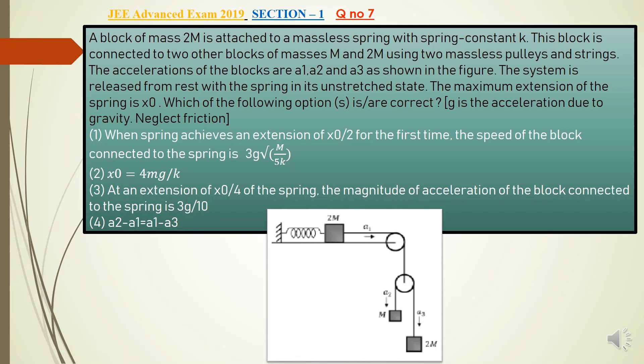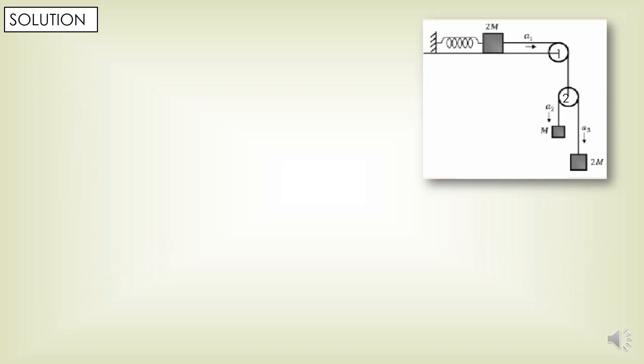The options are: Option 1 — when the spring achieves an extension of x0/2 for the first time, the speed of the block connected to the spring is 3g times root over m by 5k. Option 2 — x0 is equal to 4mg by k. Option 3 — at an extension of x0/4 of the spring, the magnitude of the acceleration of the block connected to the spring is 3g by 10. Option 4 — a2 minus a1 is equal to a1 minus a3.